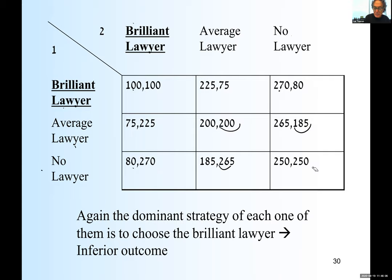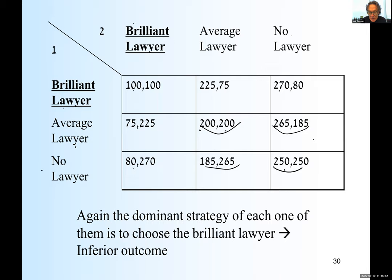So both choose the brilliant lawyer and 100/100 is the only outcome, compared to 250/250 if they don't take lawyers at all. It's inferior — not only to 250/250, but also to 200/200 and even to 265/185. In all these cases, both of them could get more, but it's 100 and 100.